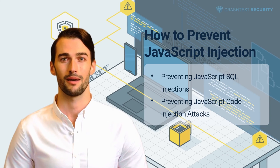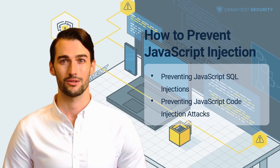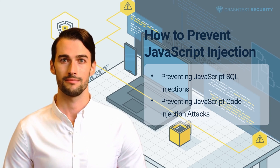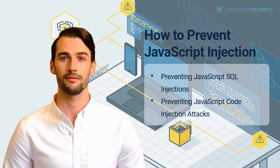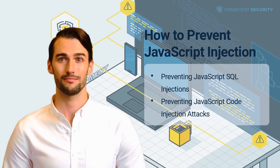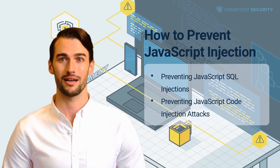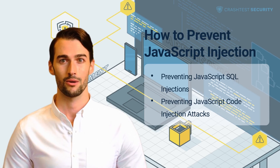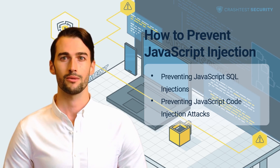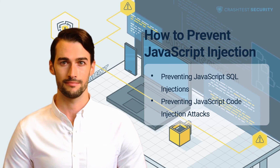Some methods to prevent SQL injection in JavaScript applications include: performing value validation and masking at the user input and data control level, using named query placeholders to escape user input before extrapolating it into the SQL query, and applying query scope and type checking.